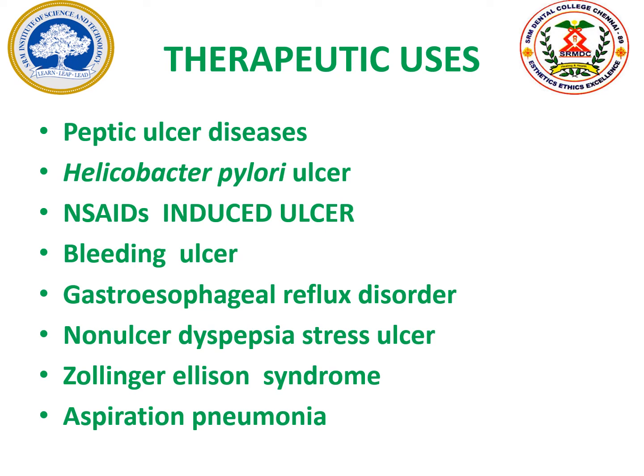For Helicobacter pylori-induced ulcer, the bacteria must be completely eradicated using antibiotics. Proton pump inhibitors are combined with two antibiotics in a triple drug regimen to eradicate H. pylori. The antibiotics may be Amoxicillin, Metronidazole, Tinidazole, Tetracycline, or Clarithromycin — two are selected and combined with a proton pump inhibitor. All three drugs are taken twice daily, morning and night, for 14 days. After 14 days, antibiotics are stopped and symptomatic treatment is continued with proton pump inhibitors.